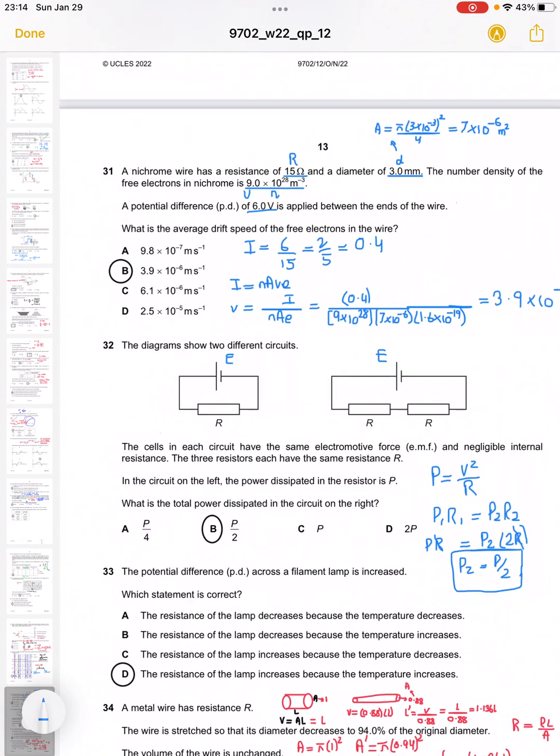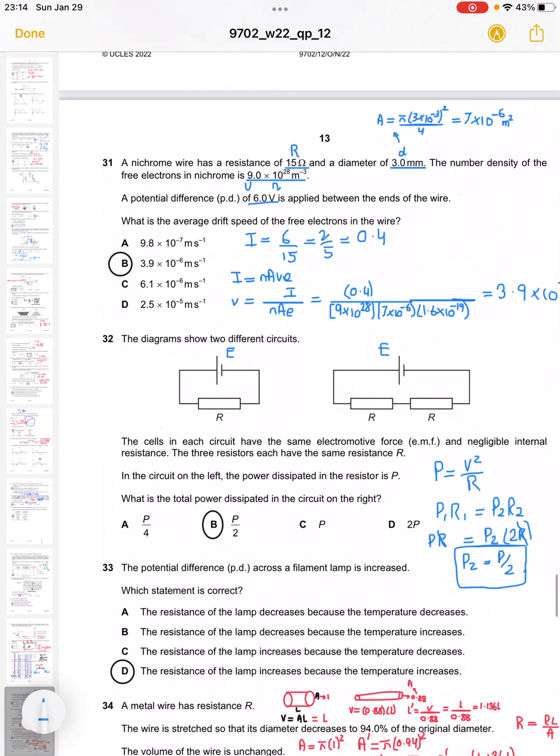Question 32 shows a cell and resistance, and the same cell with two resistors. What is the total power dissipated if the same resistor is connected in series? Because the EMF is same for both circuits, comparing P equals V squared over R, P and R are inversely proportional. So P1 R1 equals P2 R2, which gives P2 equals P over 2, making B the appropriate answer.